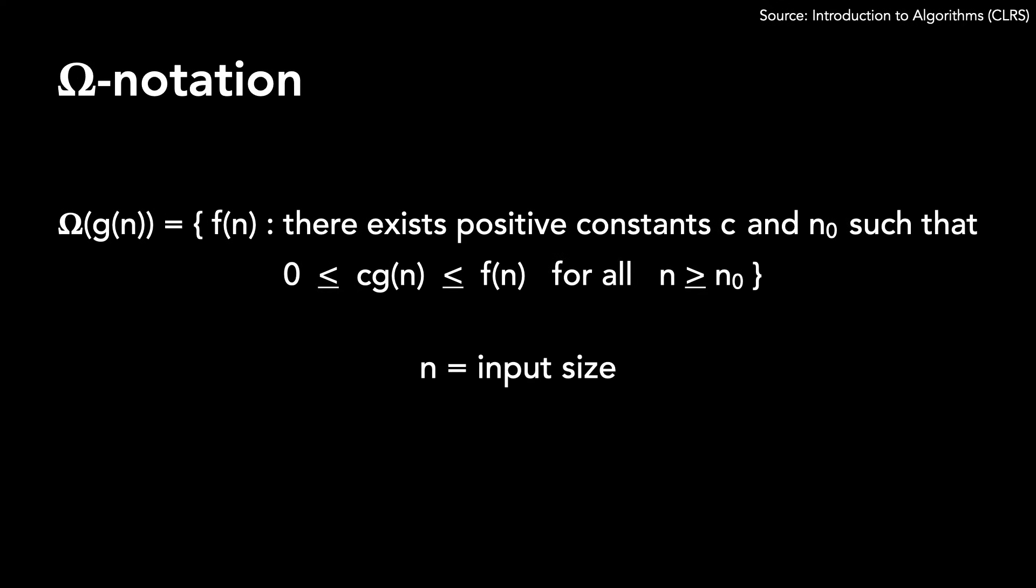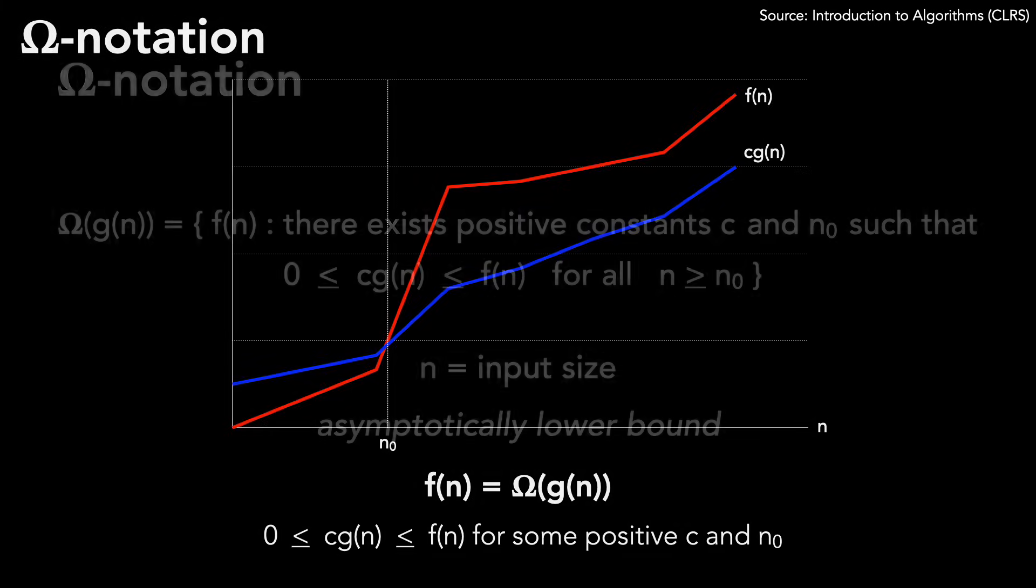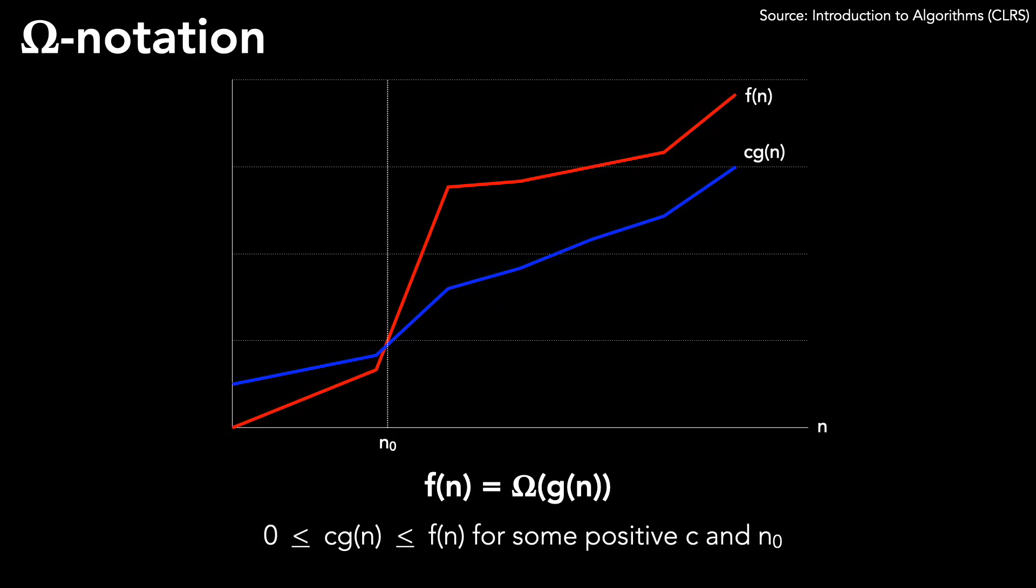Again, n is input size. Omega notation provides an asymptotically lower bound for f(n). Graphically, here is what this looks like. The runtime of f(n) is at least a constant times g(n) for any n past n0.